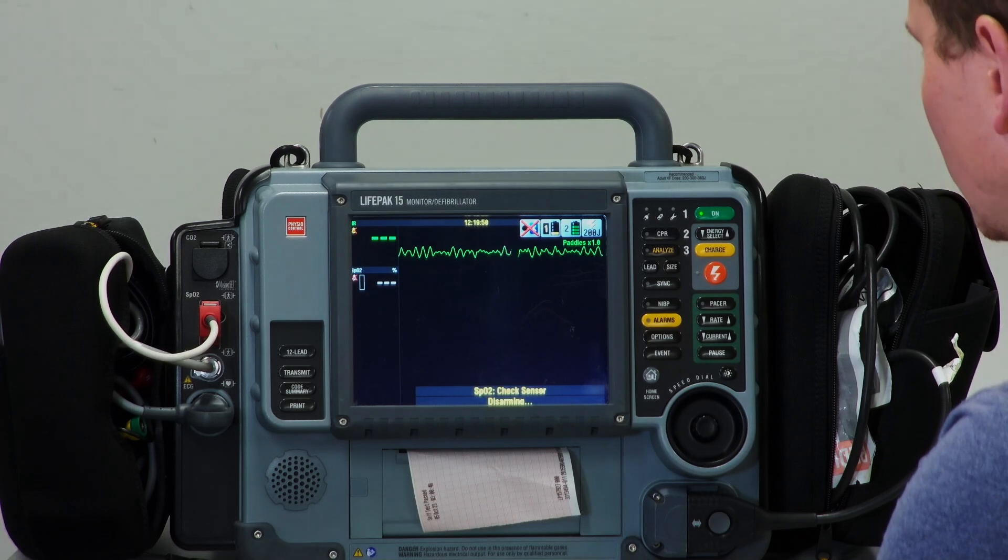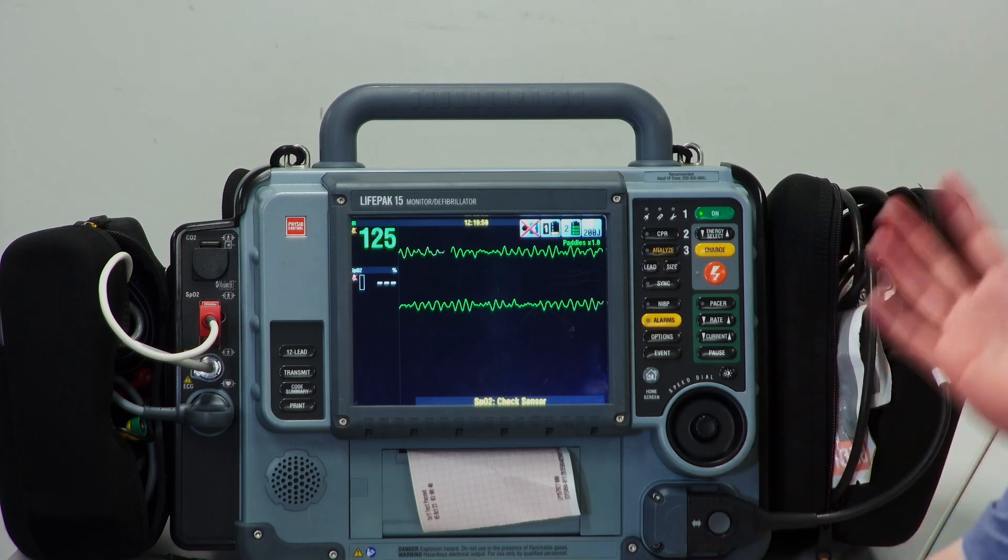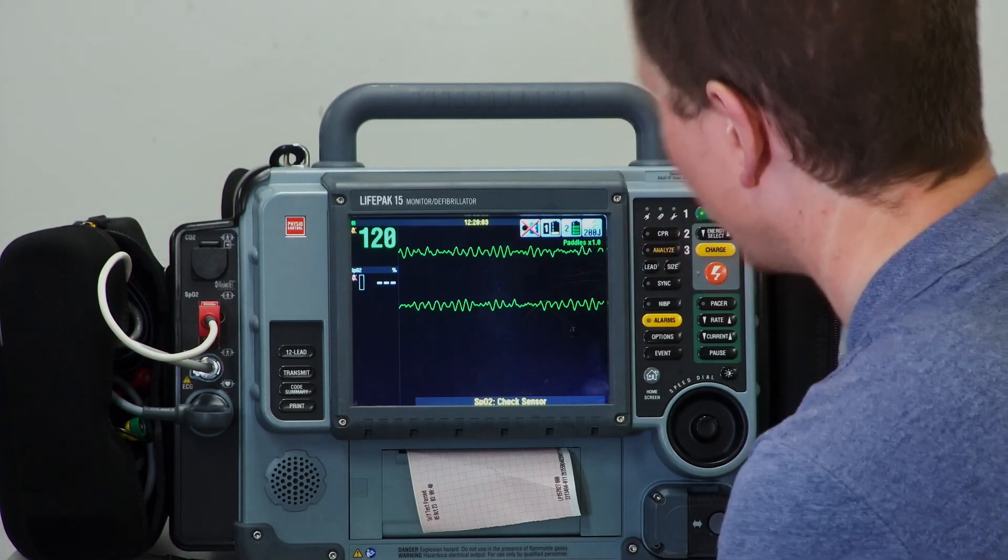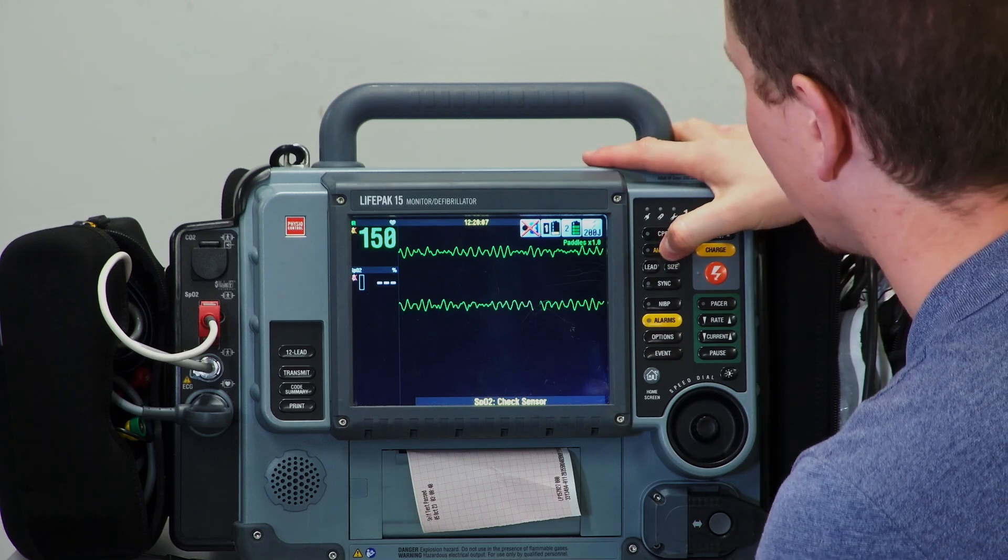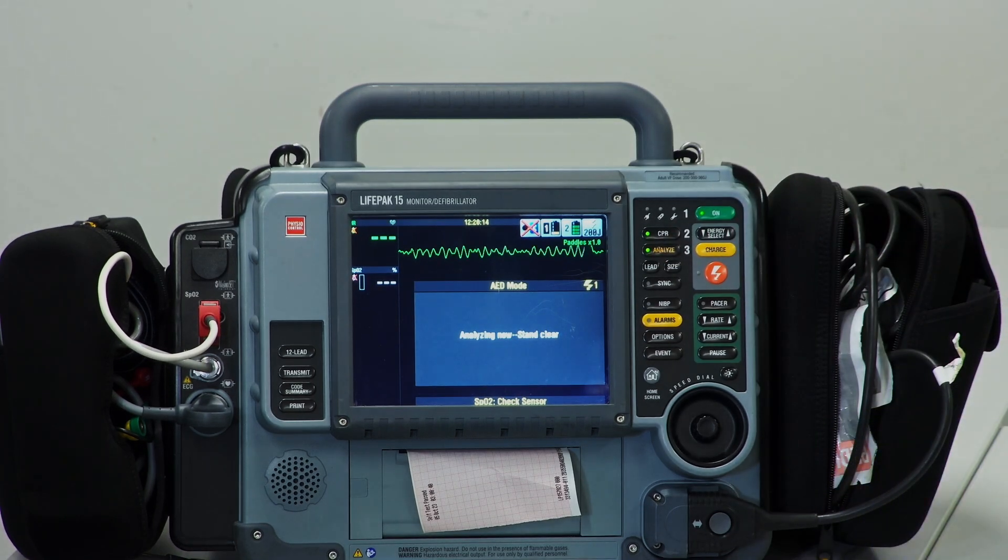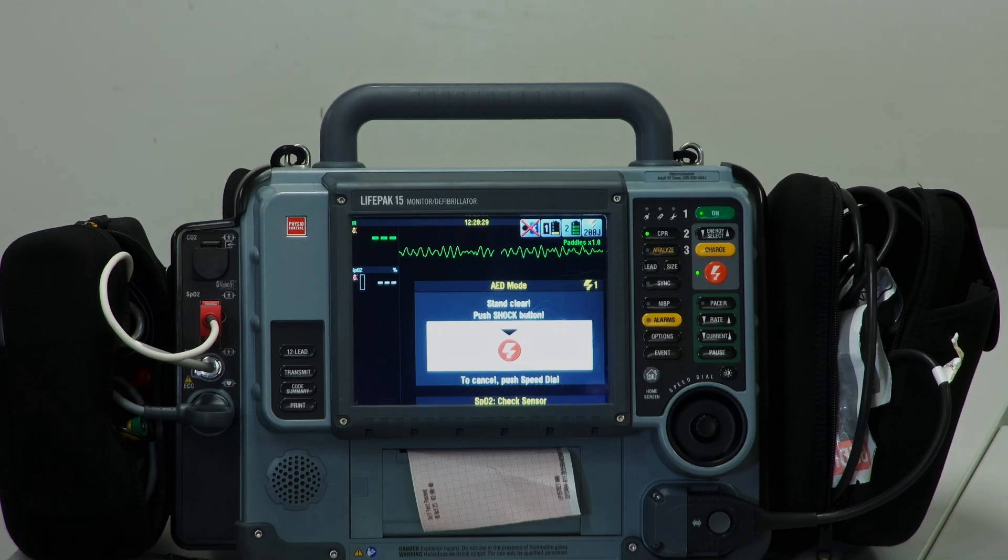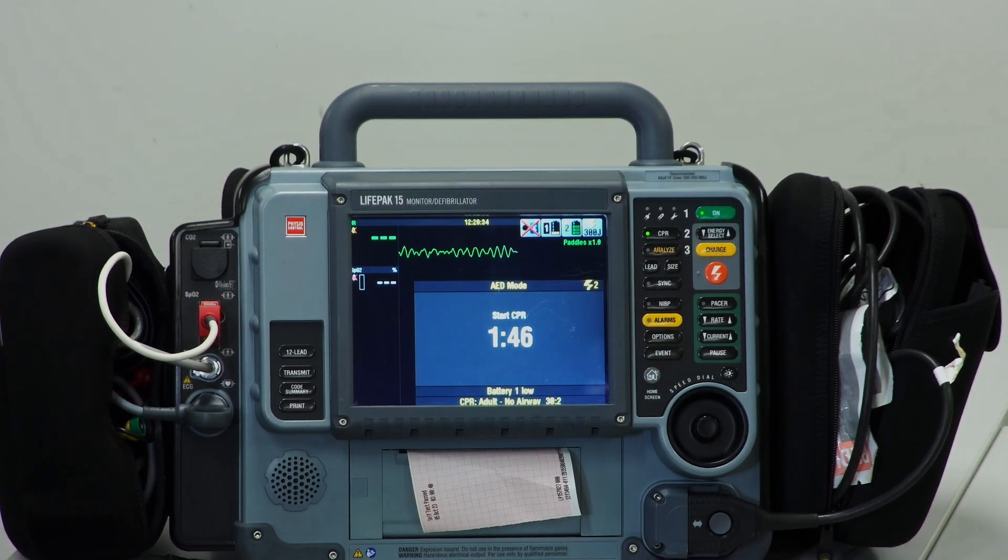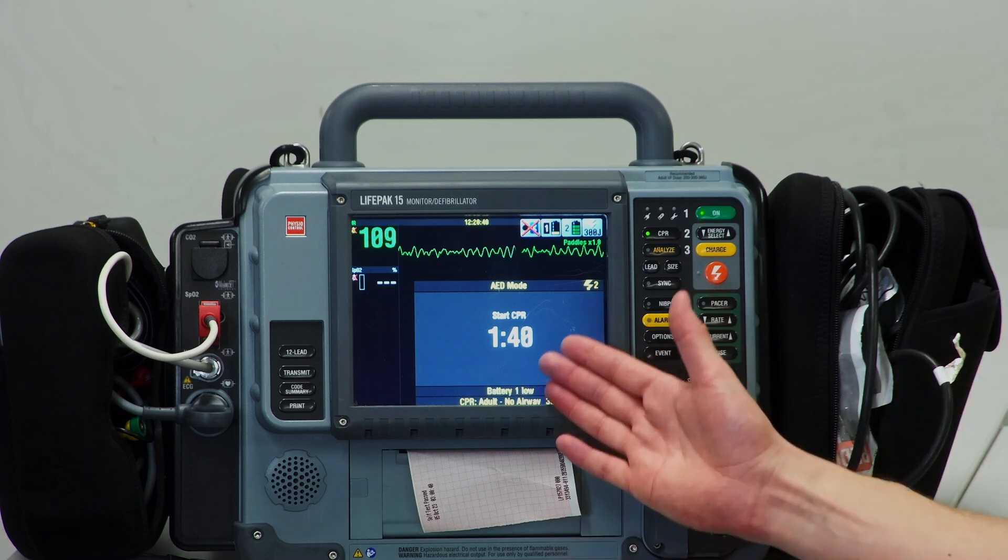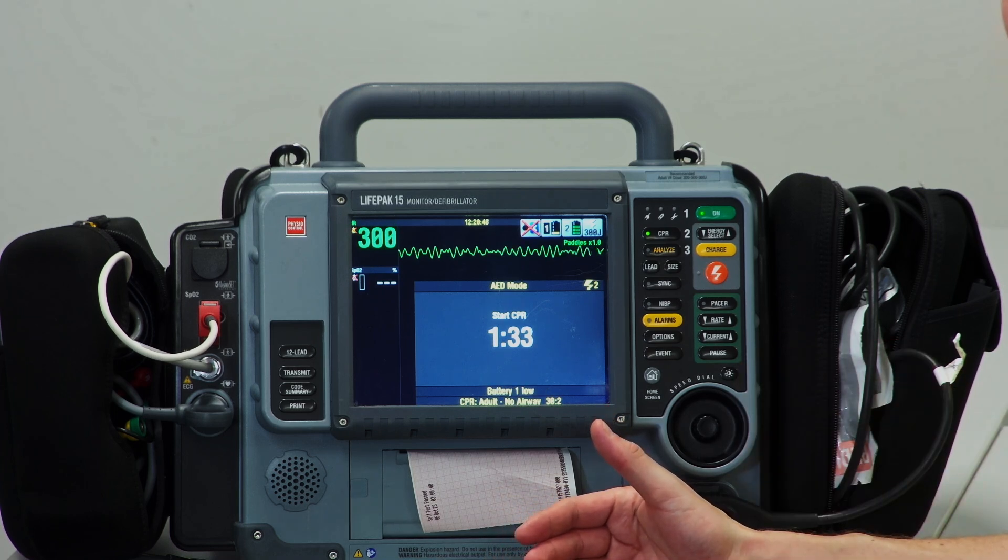If we go into AED mode, this machine can function as an AED. It's very noisy so I'm not going to be able to speak over it, but I'll demonstrate. If you just hit the analyze button, it jumps into AED mode. Analyzing now, stand clear. Shock advised. Stand clear, push shock button. Now we can step in and hit the shock button. Start CPR—and all of a sudden the metronome turns on and we have a timer. At the end of the timer it's going to tell you to reanalyze and then tell you whether you need to be shocking or not.